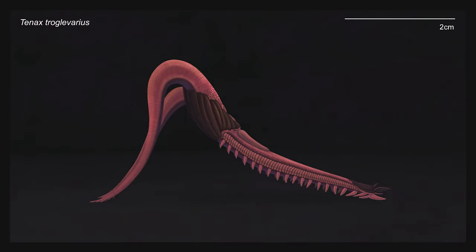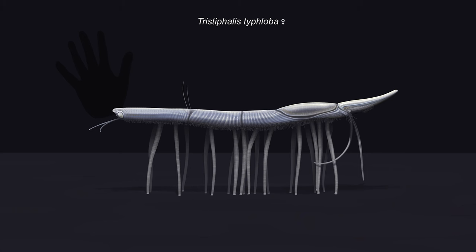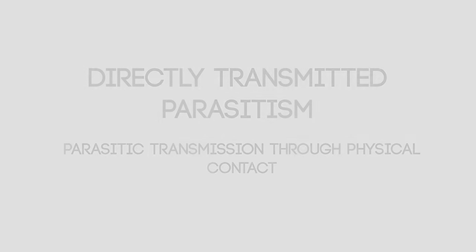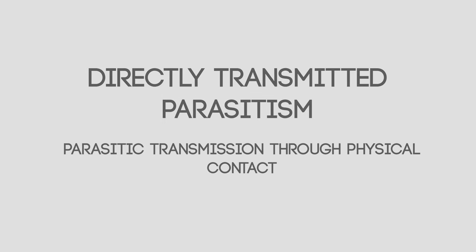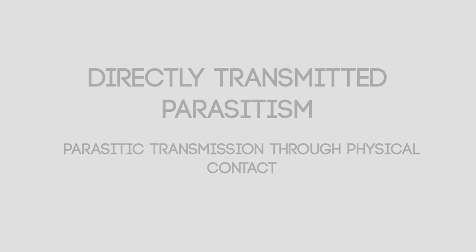The relationship between Tenax troglivarius and Tristophallus typhloba illustrates how the targeting of energetically costly areas of an animal's body, such as the reproductive organs, can be both beneficial for a parasite and costly for the host. Such examples are rarer on Isla, and it's far more common to see examples of directly transmitted parasitism, defined as an instance where a parasite is transmitted through physical contact between the host and itself, or the host and a secondary host. Parasites such as this often latch onto the outside of their victims, and either stay to leech the host of nutrients from the outside, or work their way into the organism.